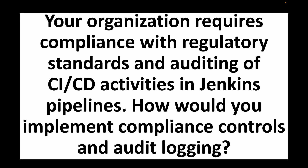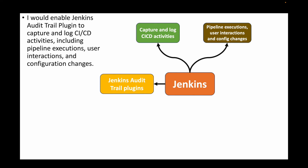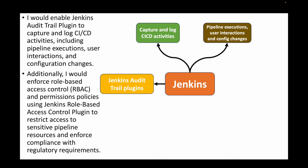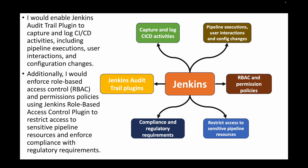The next question: your organization requires compliance with regulatory standards and auditing of CI/CD activities — how would you implement compliance controls and audit logging? Enable the Jenkins audit trail plugin to capture and log CI/CD activities including pipeline executions, user interactions, and configuration changes. Additionally, enforce role-based access control and permission policies using the Jenkins RBAC plugin to restrict access to sensitive pipeline resources, ensuring compliance with regulatory requirements.